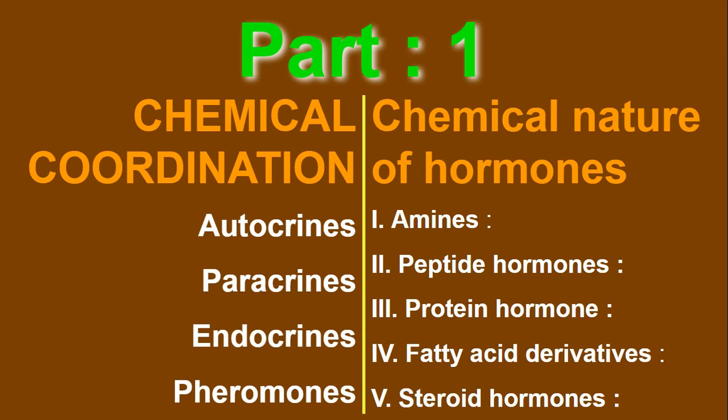In this part one, we will cover the types of chemical coordination: autocrine, paracrine, endocrine, and pheromones. These four kinds of chemical coordination we will learn about.